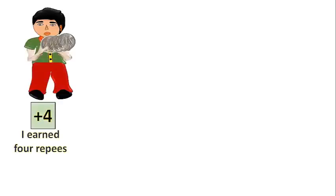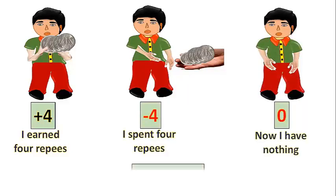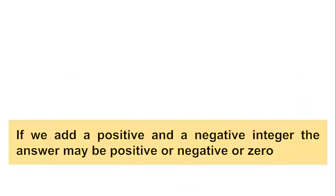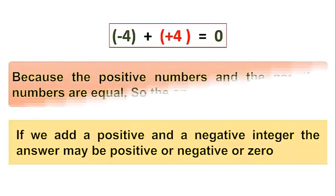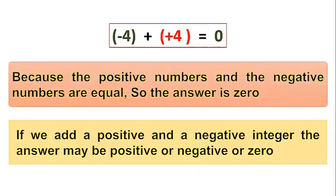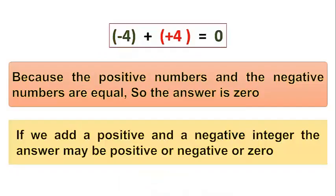A boy says he earned 4 rupees. After some time, he spent that 4 rupees, so finally he has nothing in his hand. So plus 4 and minus 4 gives 0. Because the positive number and the negative numbers are equal, the result on addition is 0. If we add a positive and negative integer, the answer may be positive, negative, or 0.